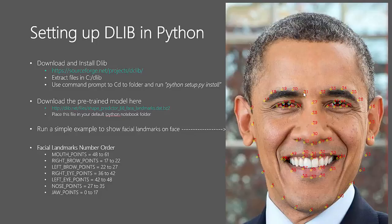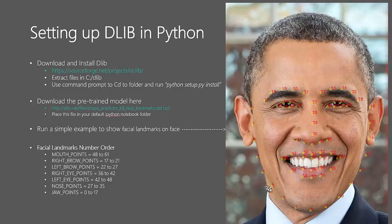Similarly for the left eyebrow the range is 22 to 26, and the remaining ranges indicate different key points along the face. That's how this landmark detection works — it gives us 68 points across the face. We'll use those in our future projects, but for now let's start playing with dlib and do some simple landmark detection.